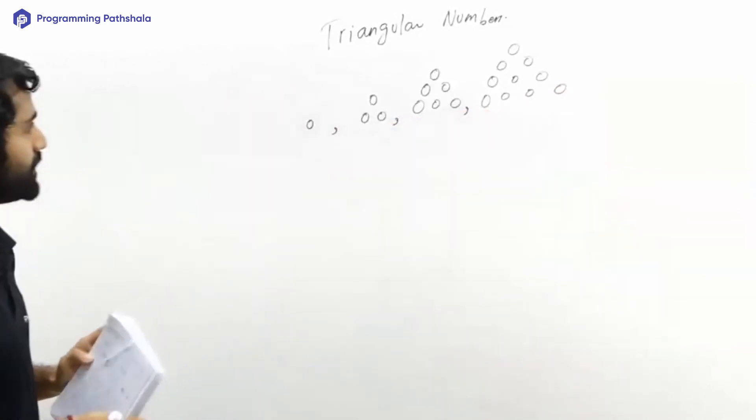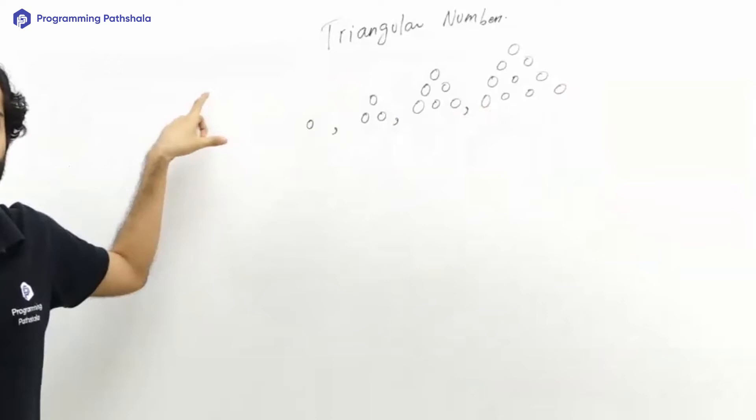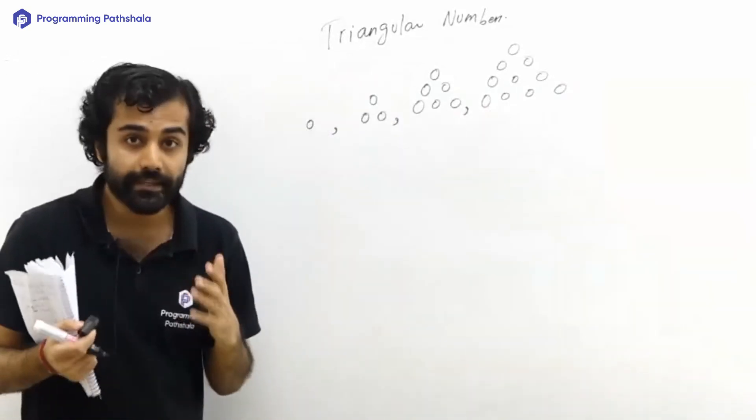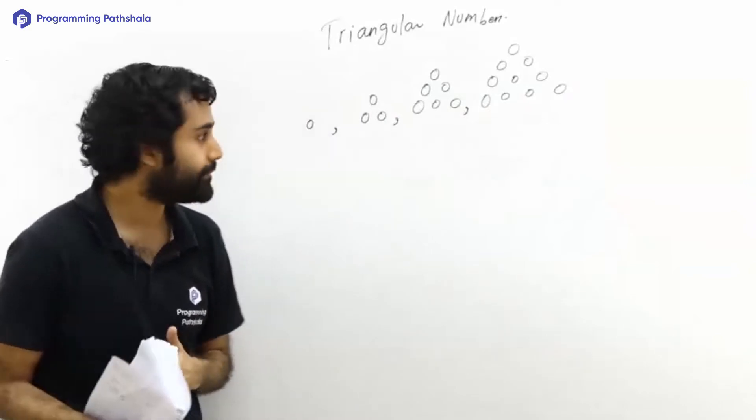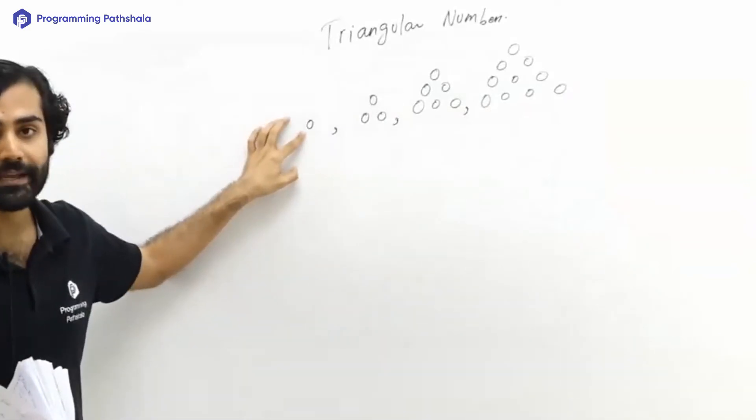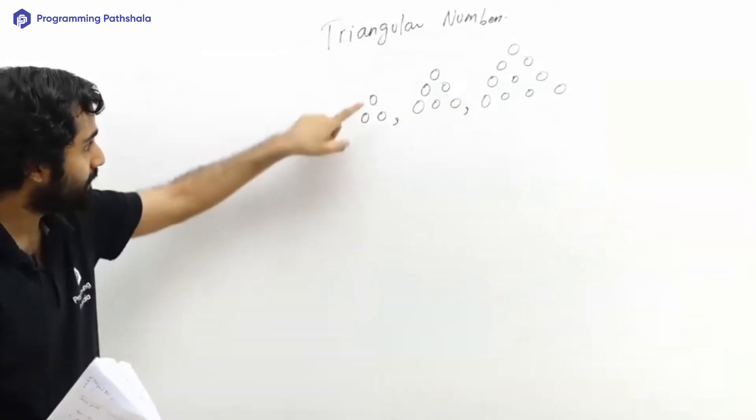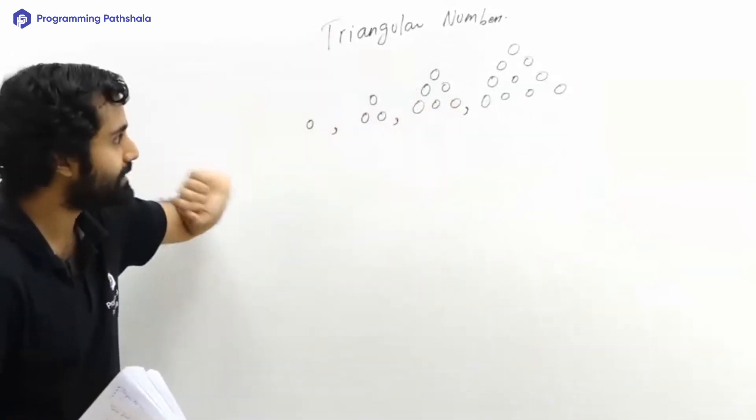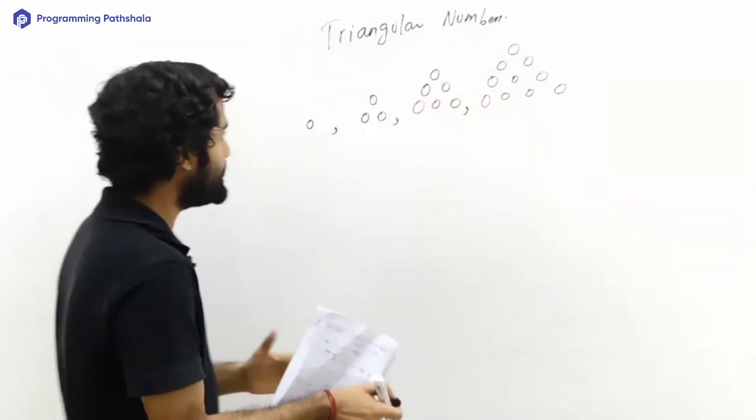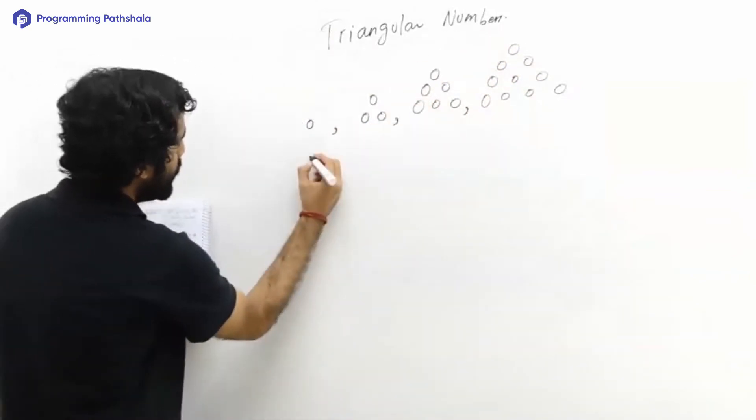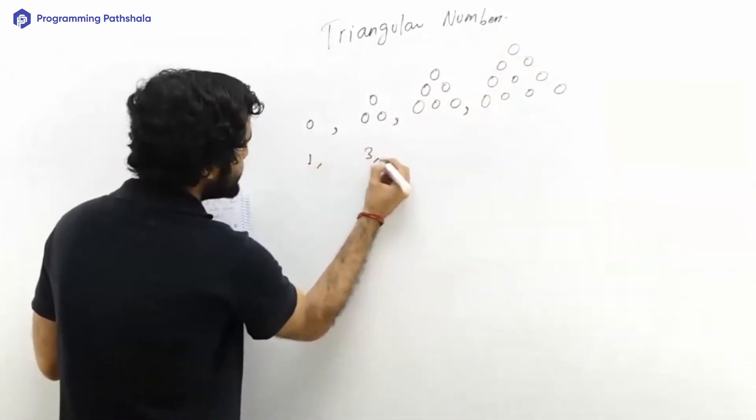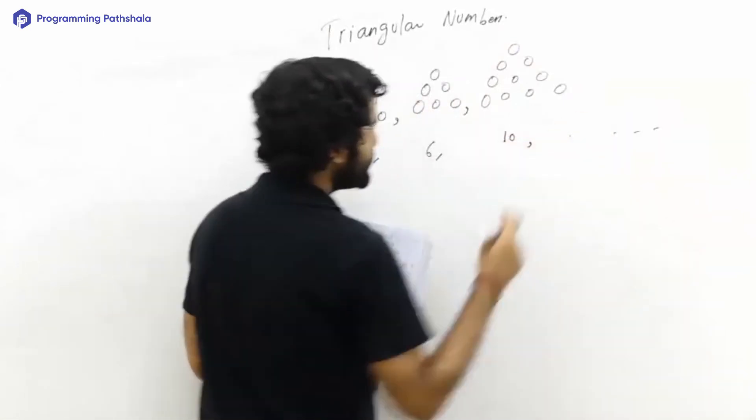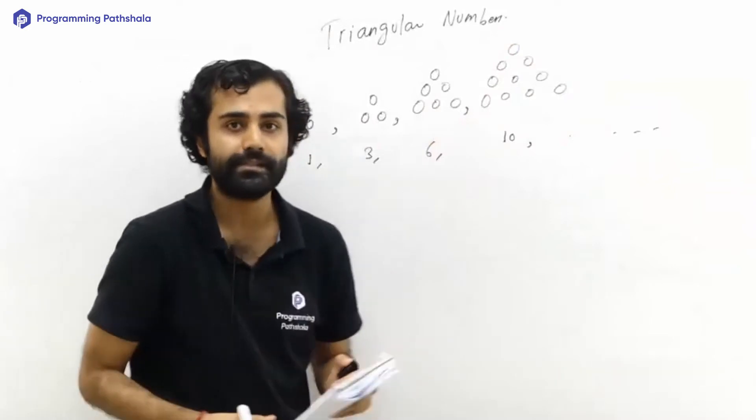Do you see something? You see that there are several triangles which are being drawn by using dots. This is the smallest triangle containing only one dot. This triangle has got three dots, this triangle has got six dots, this triangle has got ten dots. So let me write that. One dot, three dots, six dots, ten dots, and so on.